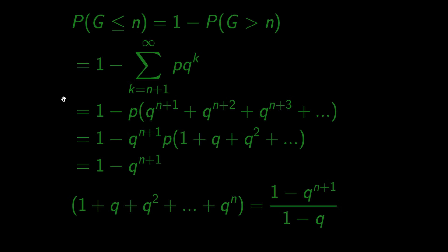We will talk about distribution functions in more detail when we look at continuous distributions. For now, notice how this number quickly converges to 1 when n goes to infinity. To be precise, the speed of convergence is exponential as we have q to the power of n plus 1.